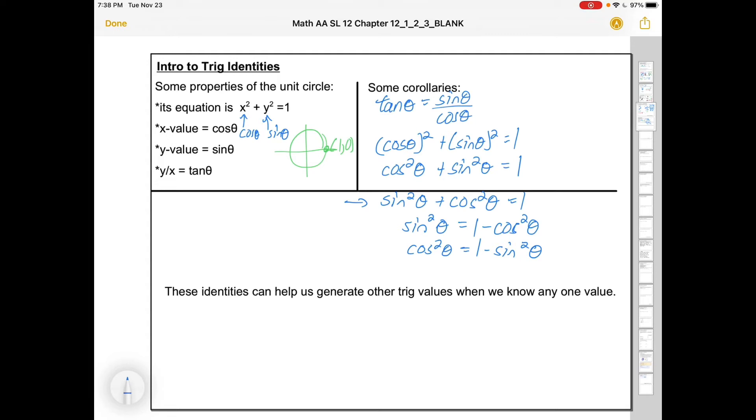And trig works very much that way, where you can have multiple ways of representing a graph, and you can also represent complicated stuff by adding together essentially just basic building block sine graphs. These identities can help us generate other trig values when we know one value. They're not the only way to get there, but they can be really helpful.